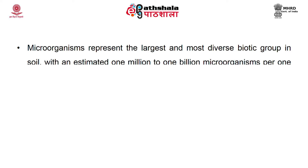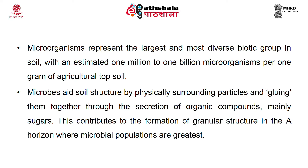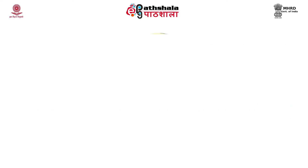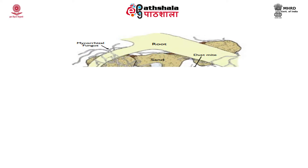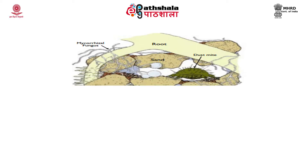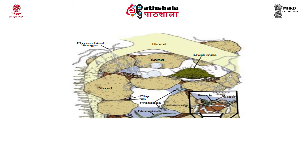Microorganisms represent the largest and most diverse biotic group in soil, with an estimated 1 million to 1 billion microorganisms per gram of agricultural topsoil. Microbes aid soil structure by physically surrounding particles and gluing them together through the secretion of organic compounds, mainly sugars. This contributes to the formation of granular structure in the A-horizon, where microbial populations are found to be greatest. Soil microbes include bacteria, protozoa, algae, fungi, and actinomycetes. Among these, bacteria are the smallest and most diverse soil microbes, important in soil organic matter decomposition, nutrient transformation, and small clay aggregation.